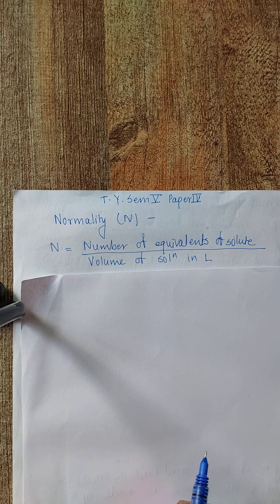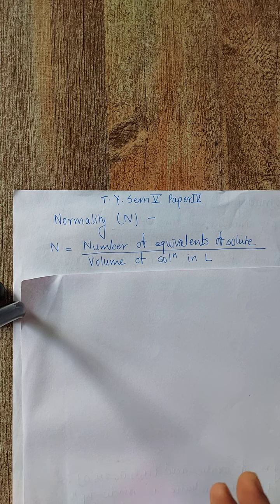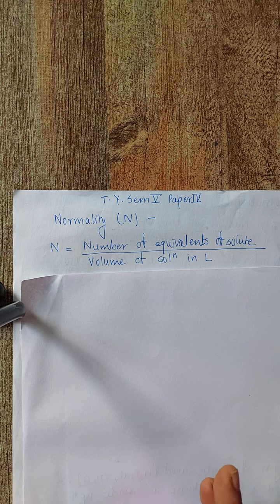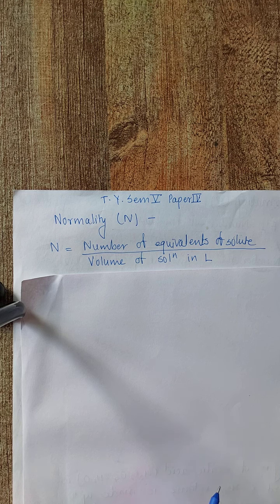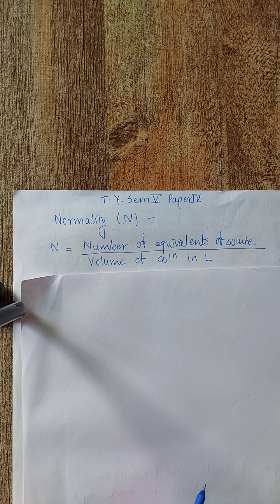If we want to state the definition of a one normal solution, then one normal solution is defined as the solution which contains one equivalent of solute per one litre of solution. That is what we consider a one normal solution.